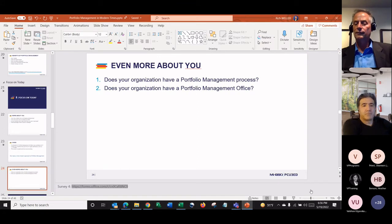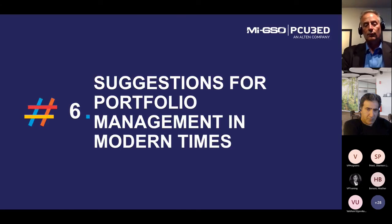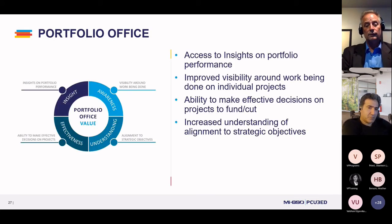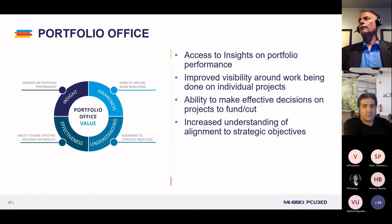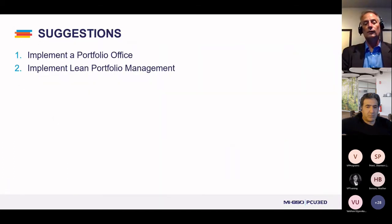Let me go back to the story. Let's give you some suggestions for portfolio management in our modern times. Number one: implement a portfolio office. The value of a portfolio office includes access to insights on portfolio performance, improved visibility, more effective decision-making, and increased understanding of the alignment of projects to strategic objectives. Just having that portfolio office and some roles in place to govern that process provides great value to the organization as a whole. If you want to read more details on the portfolio office, I'm giving you a link — you can go deep-dive on those details.